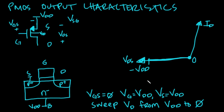So in that case, it doesn't matter how big we make the difference between VDS. This is still an open switch, just like the NMOS case.